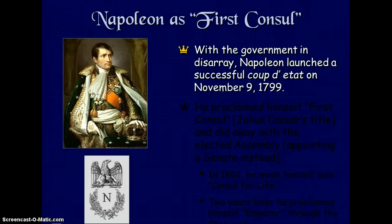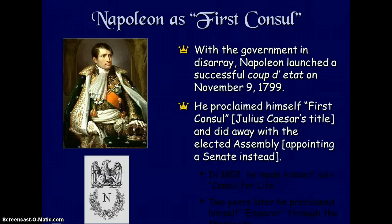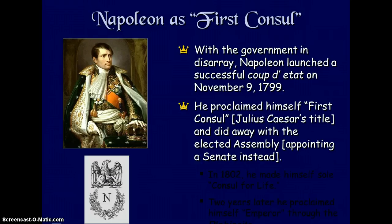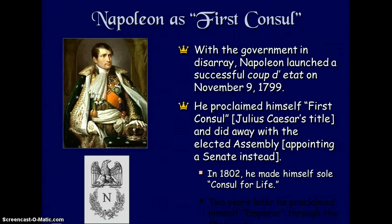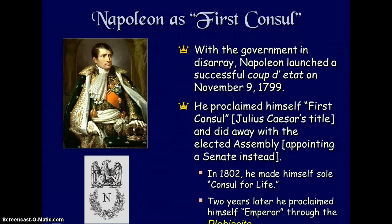With the government in disarray, Napoleon launched a successful coup d'état on November 9, 1799. He proclaimed himself First Consul, a title used by Julius Caesar himself, and did away with the elected assembly, appointing a senate instead. In 1802 he made himself sole consul for life, and two years later he proclaimed himself emperor through the plebiscite — a referendum where the people chose him as emperor.